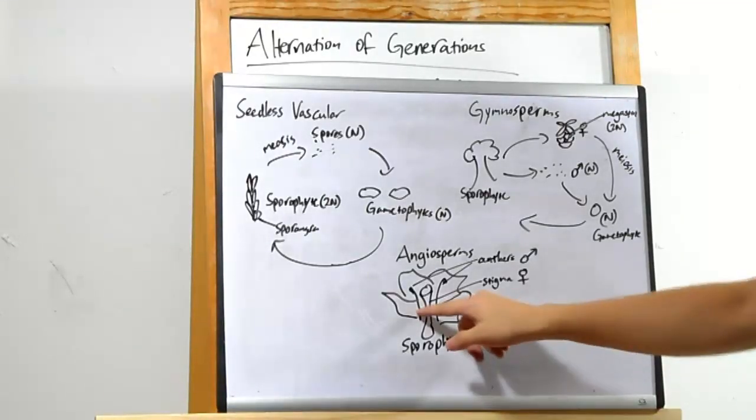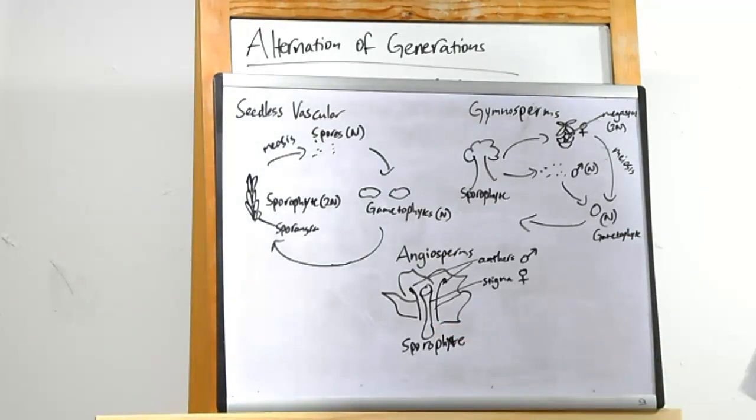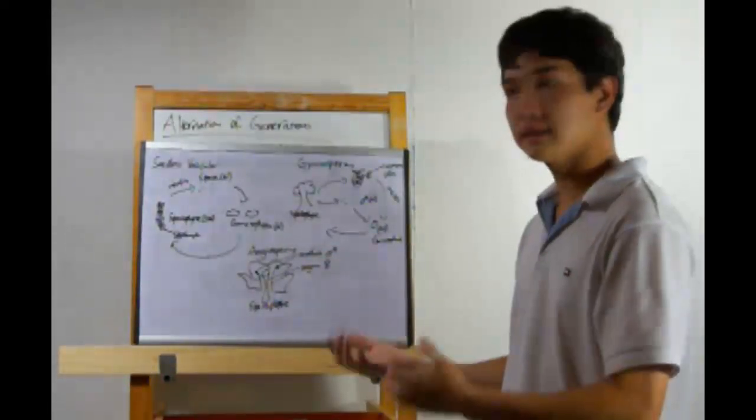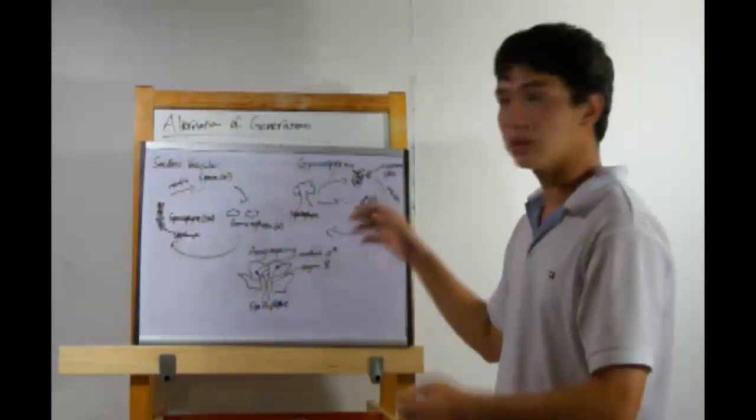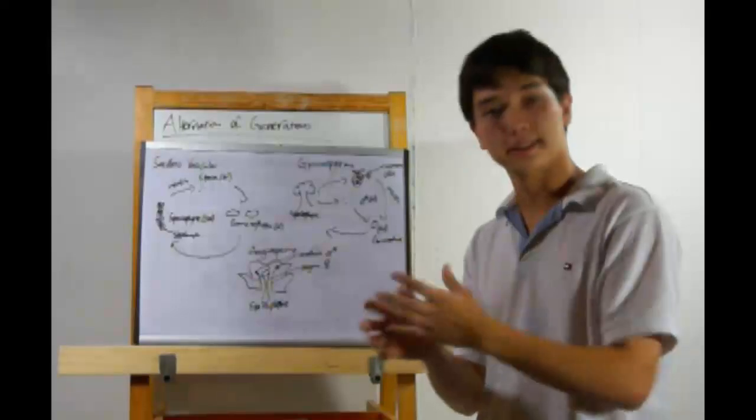We have anthers, which are male structures, and the stigma, which is the female structure. You probably know a bit about flowers already. The anthers will produce pollen. Bees, insects, and even the wind will carry pollen over to other flowers. And when they do so, pollen will go and land in the stigma, which is very sticky on the inside.